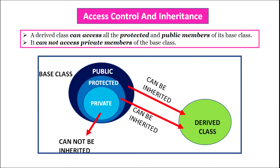Access control and inheritance: a derived class can access all the protected and public members of its base class, but it cannot access the private members of the base class. All public and protected members become members of the derived class, but private members of the base class are never inherited.